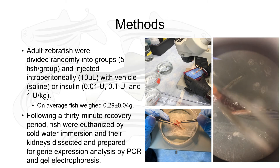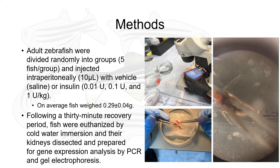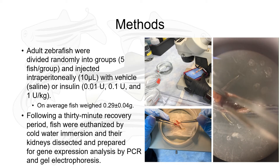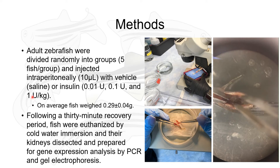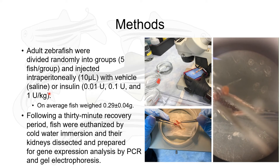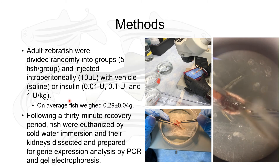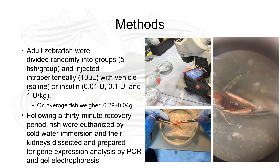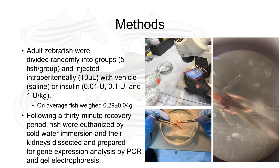To conduct the research, adult zebrafish were divided randomly into four groups of five fish per group and injected intraperitoneally with different concentrations of insulin prepared by serial dilution: 0.01 units per kilogram, 0.1 units per kilogram, and 1 unit per kilogram. The fourth group was injected with saline solution. The fish were anesthetized using an ice bath and then injected intraperitoneally with 10 microliters of the respective insulin concentration or saline solution, as shown in this image.